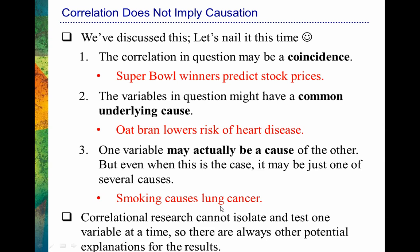So here's the bottom line you want to really understand: correlational research is not isolating and testing one variable at a time the way experimental research does. When we are not isolating one variable at a time, there are always other potential explanations for the results — that's one limitation of correlational research. That's why we always want to remind ourselves that correlation doesn't necessarily imply causation.